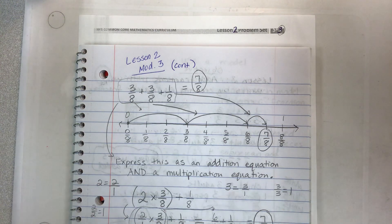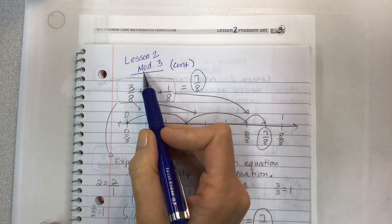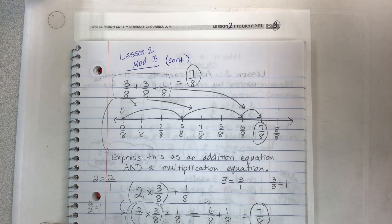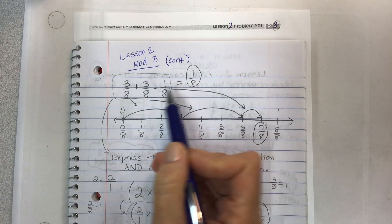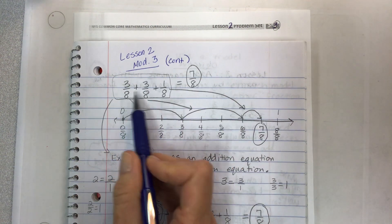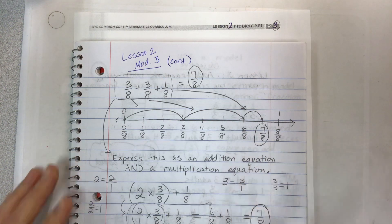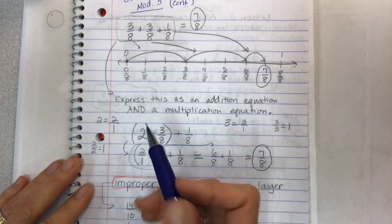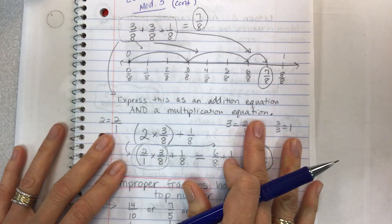Hey kids, welcome back. Here is part two of the lesson two video that has the back side of our page in the problem set or learn book. Just a review in case you didn't see the first video: in this activity we are taking a fraction and breaking it into equal parts with the extras on the side — two or three equal parts if you can — using a number line to show our work, and then expressing things as a multiplication equation.